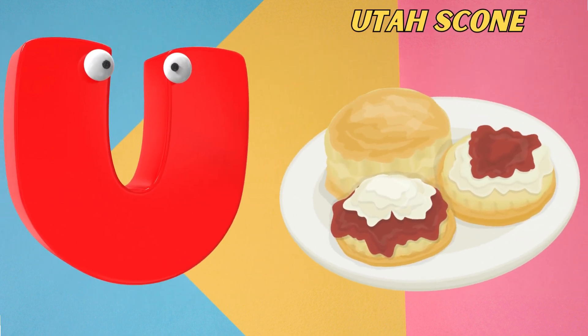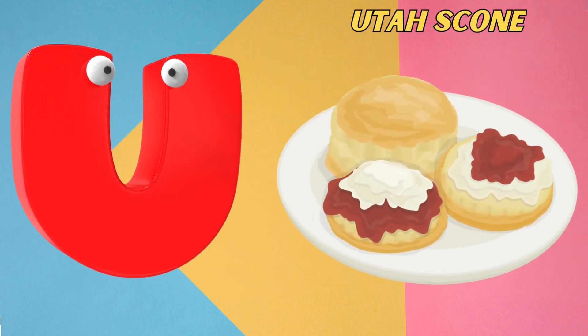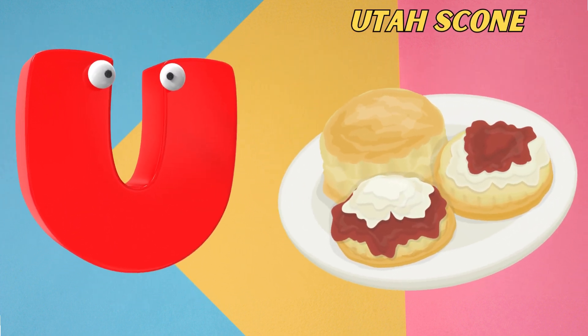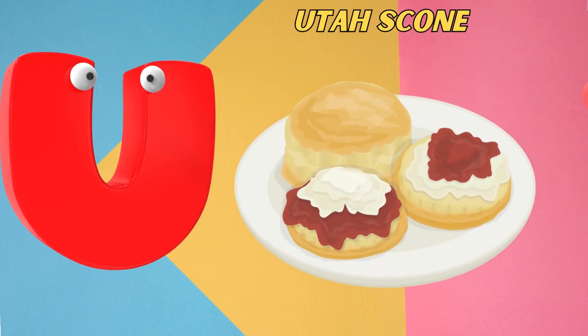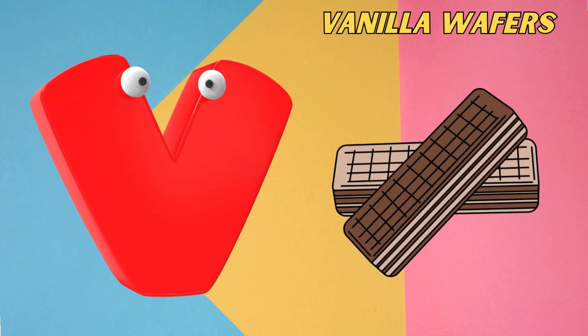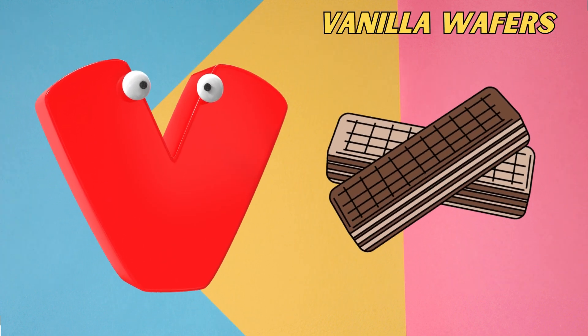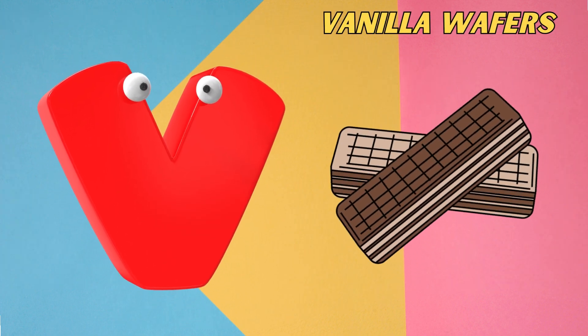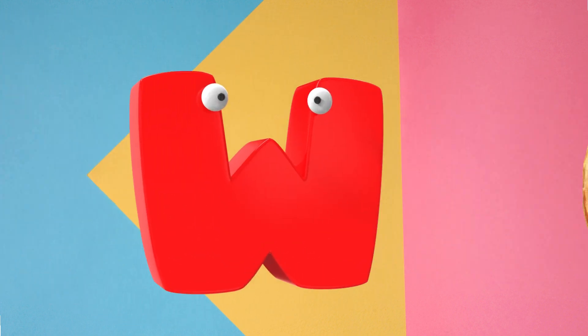U is for Utah Skull. U, U, Utah Skull. V is for Vanilla Wafers. V, V, Vanilla Wafers.